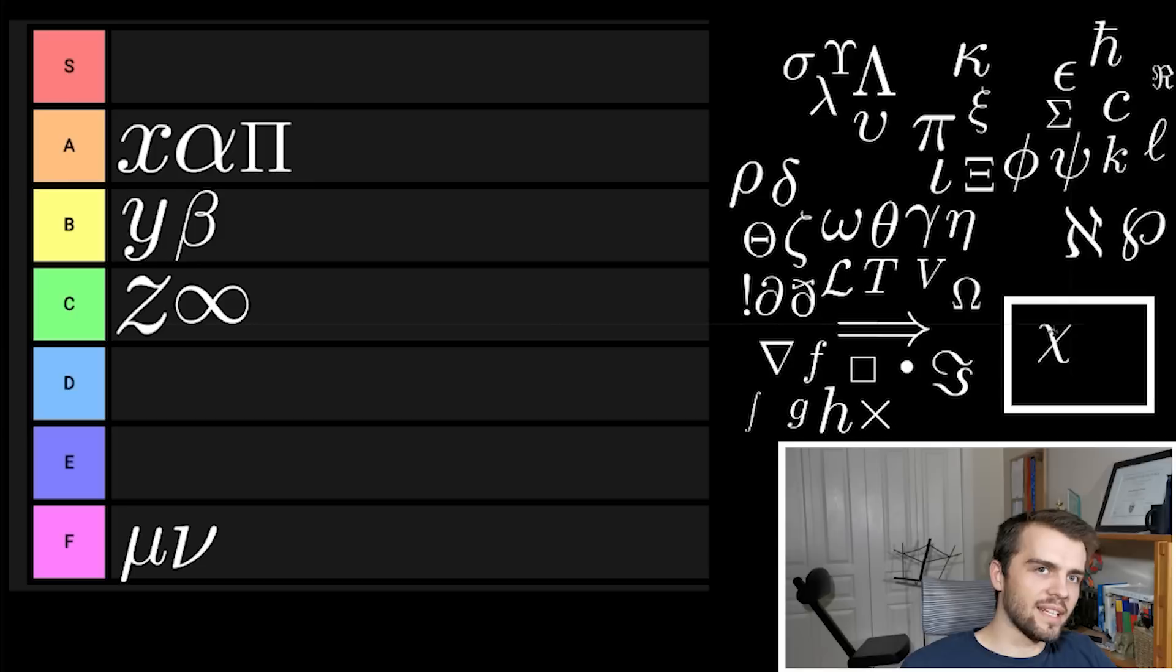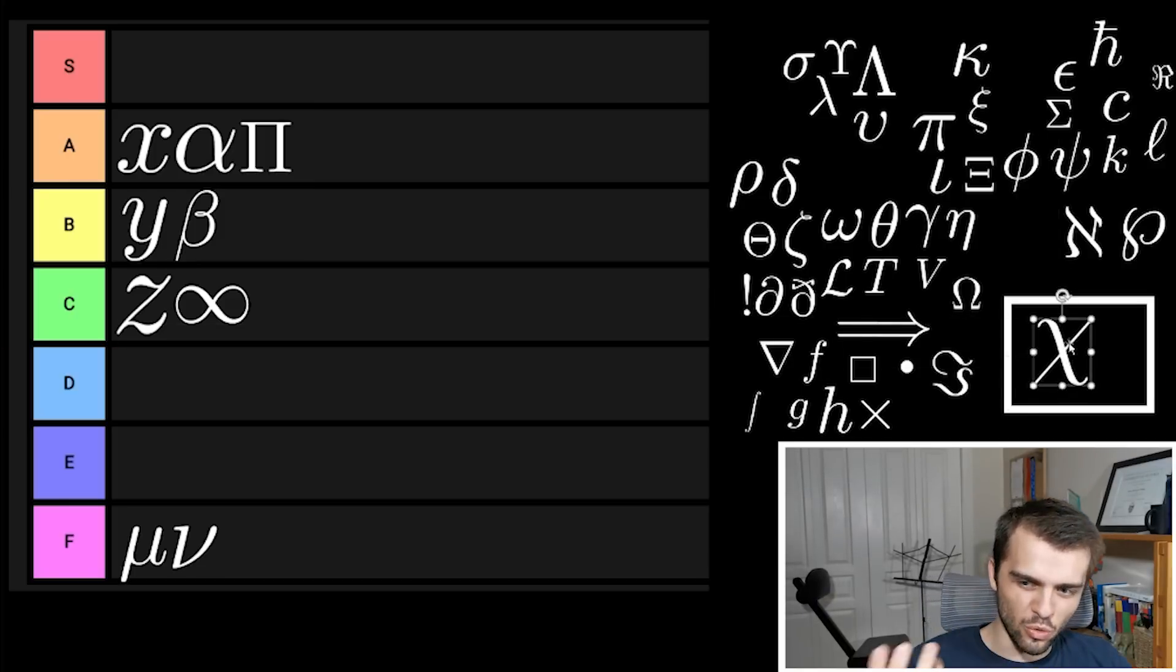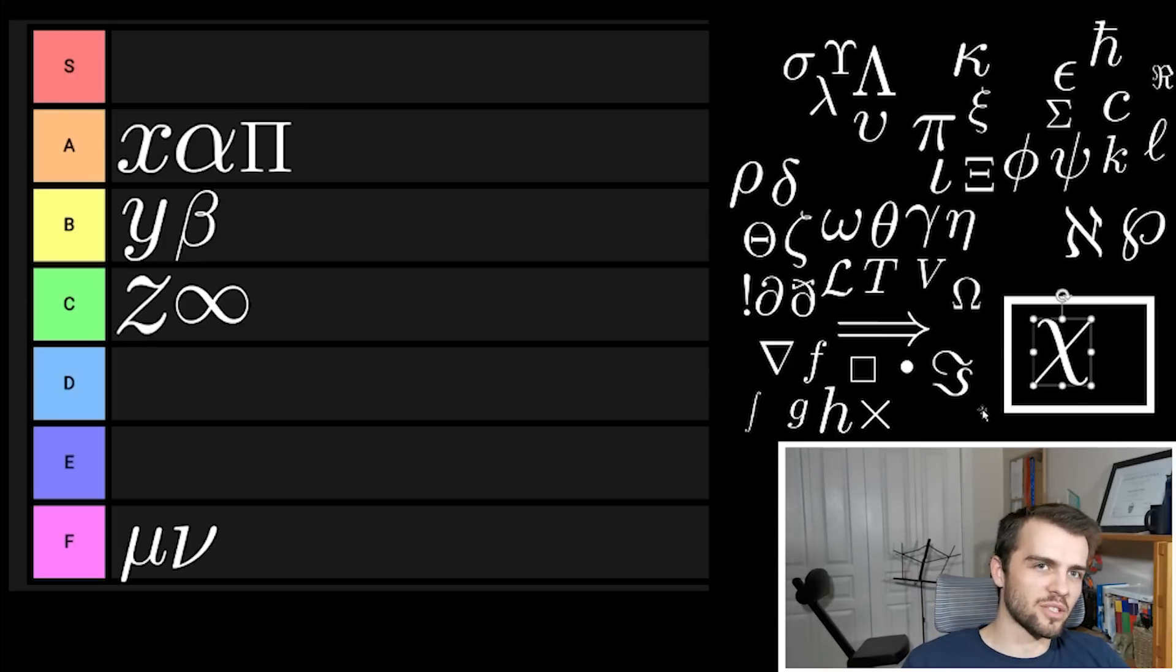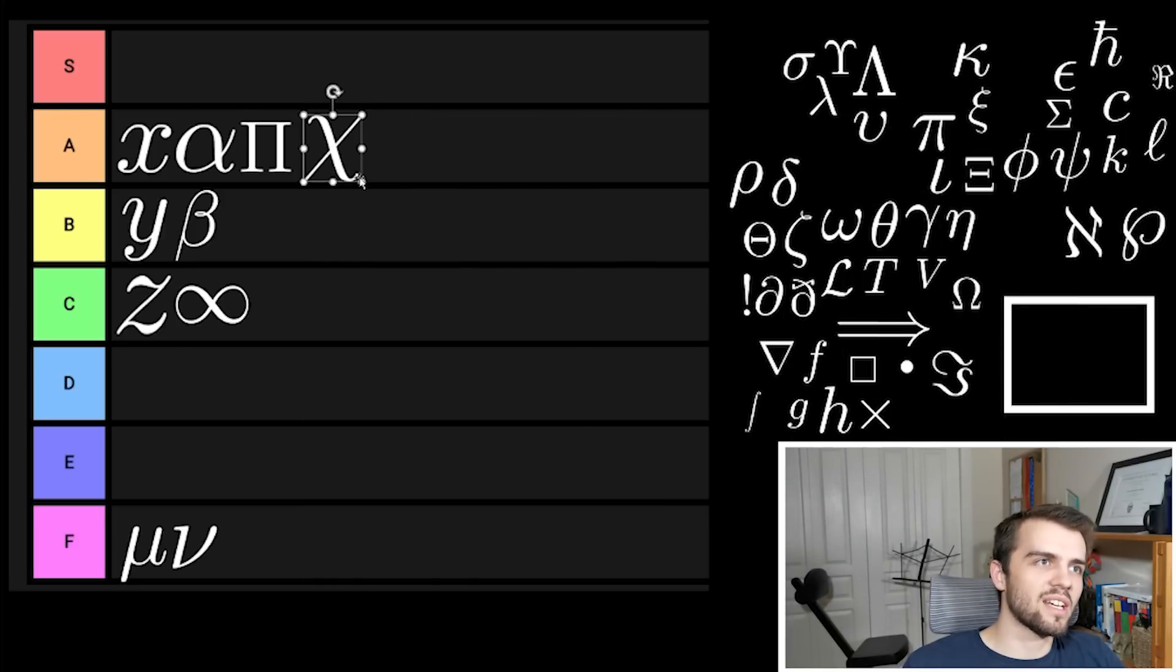Next up chi, not to be mistaken with X. Chi is a pretty cool symbol because it always represents something cool like the chi-squared distribution. I associate it with good things in my mind. I also like how this is really thin and then this line is thicker. It gives kind of a dimensionality to this symbol. I'm going to put chi in A tier for being a cool dude.